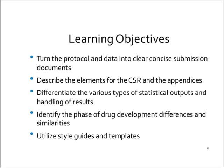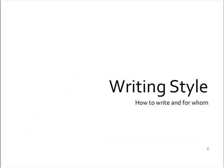Some of the objectives we're going to talk about today: how we're going to turn the protocol and the subsequent data into clear, concise submission documents. We'll talk about the elements for the clinical study report and the appendices. We'll learn about differentiating the various types of statistical outputs and how you handle those data. We'll talk about the phases of drug development, their differences and similarities, especially as they relate to writing clinical study reports. And we'll talk about style guides and templates, which are a big issue.